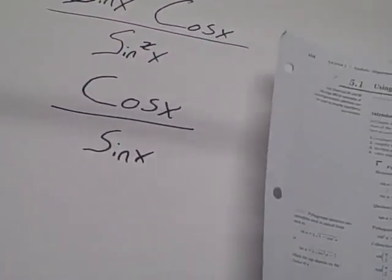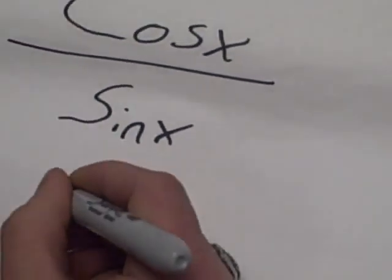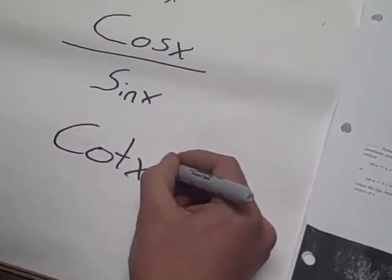Now we're stuck with fractions, so we go back to the sheet, and we look here at the quotient identities, and there are fractions, and there is cosine over sine, which equals cotangent. So, we change this to cotangent x, and that is your answer.